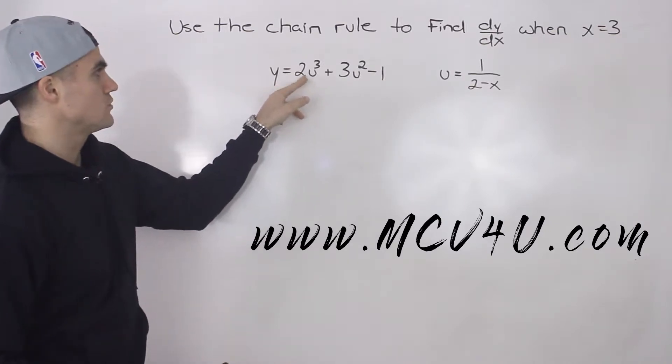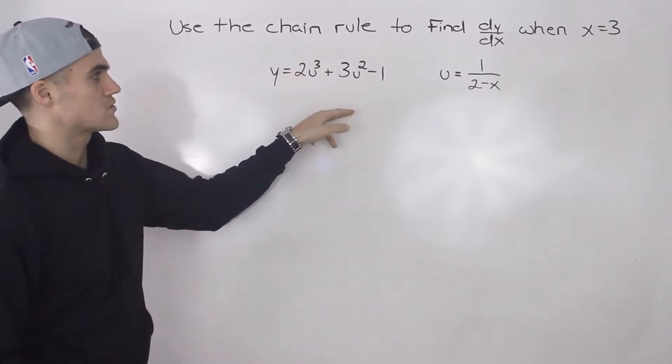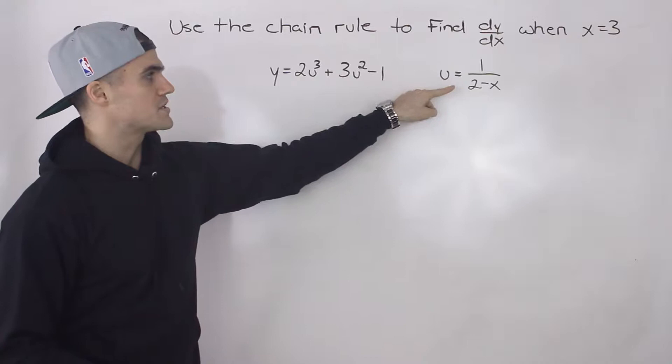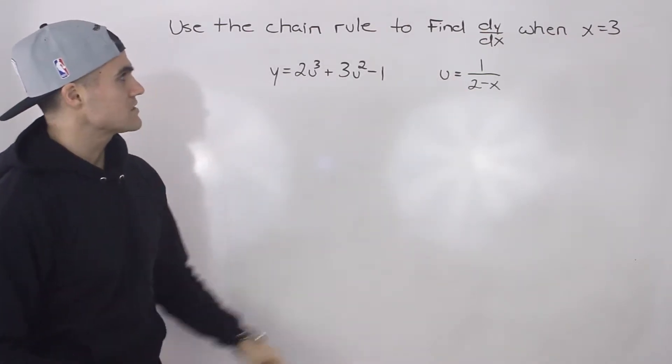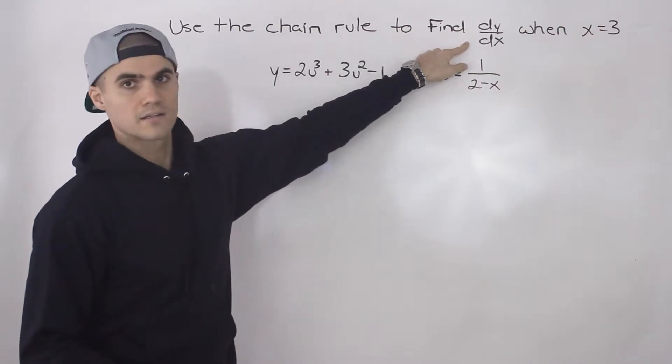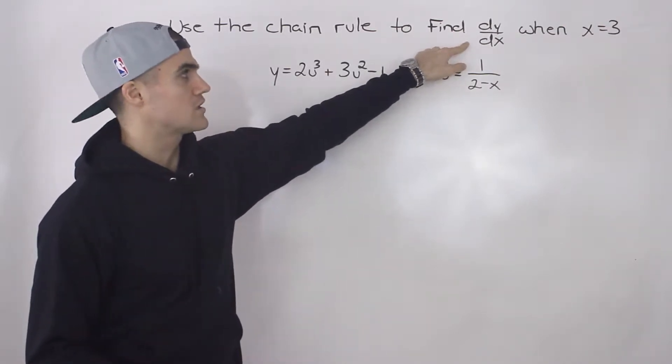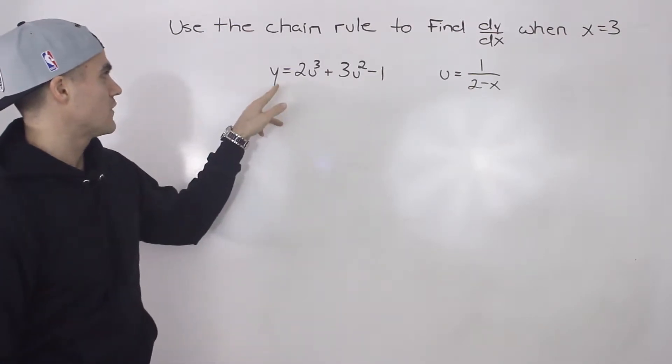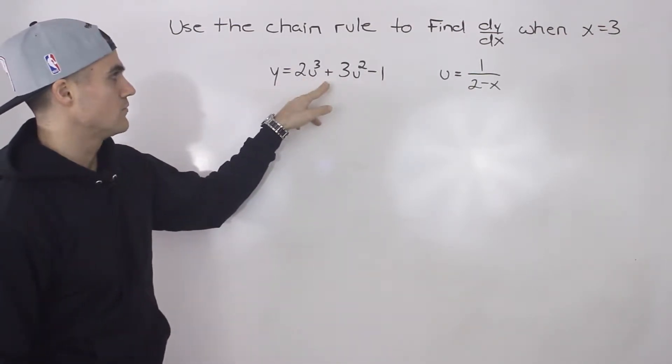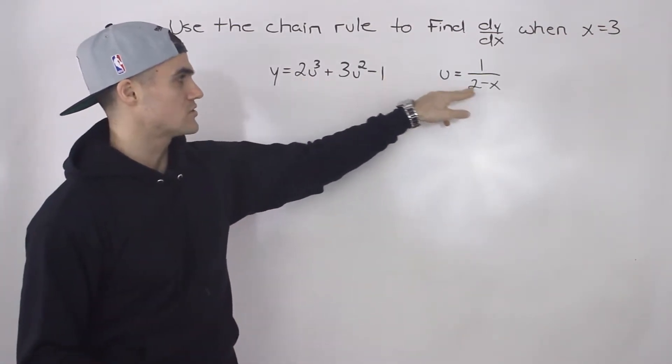So we got y equals 2u³ plus 3u² minus 1. And then we got u is equal to 1 over 2 minus x. Notice that we have to find dy/dx, meaning that we have to have a function y in terms of x. Well, notice here we have a function y in terms of u, and then a function u in terms of x.